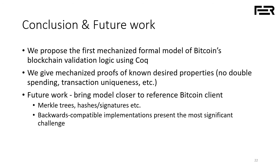In conclusion, we propose the first mechanized formal model for blockchain validation logic in Bitcoin. We use this model to prove three known desired properties, thereby demonstrating the utility of the model. In future work, we mostly want to focus on bringing the model closer to the actual Bitcoin client. We feel that backwards-compatible implementations are the most significant challenge — features like segregated witness, where you must support both legacy and new transactions with a soft fork, require that new features be hacked in to maintain compatibility. If you have ideas on how to overcome issues like that, please talk to us. Thank you for your attention.